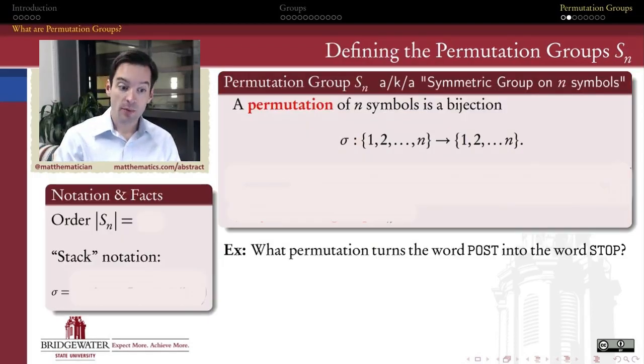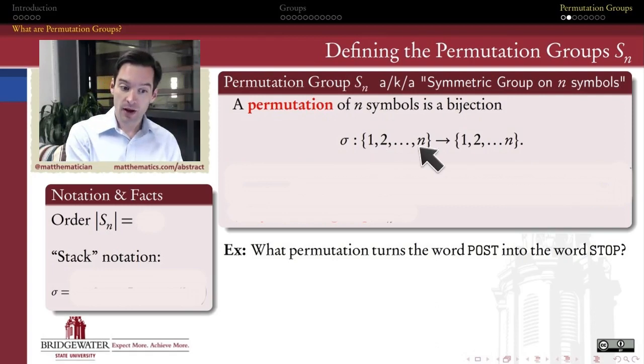Precisely speaking, a permutation of n symbols is a function that associates to each symbol another symbol. It could be the same or different, but we associate each symbol, 1 through n, to another symbol. That's the abstraction, and we want this to be a bijective function.